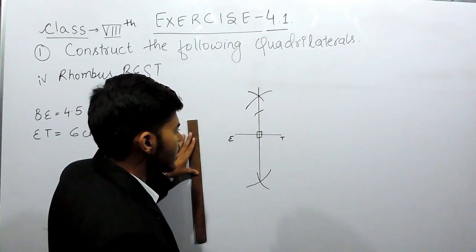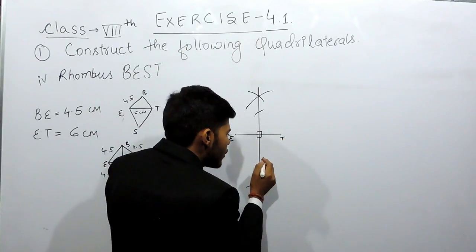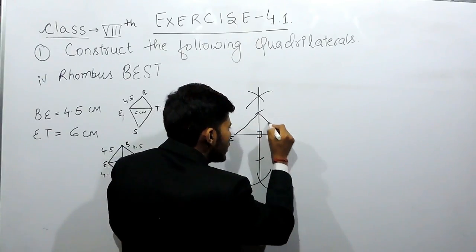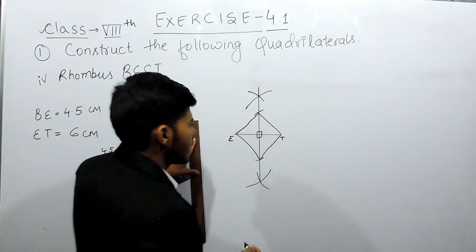Now from this point also we will cut an arc of 4.5 cm and we will join this point, this point, this point and this point.